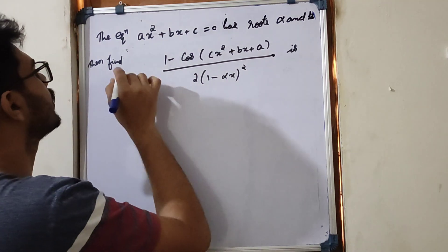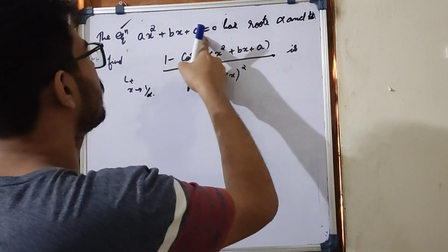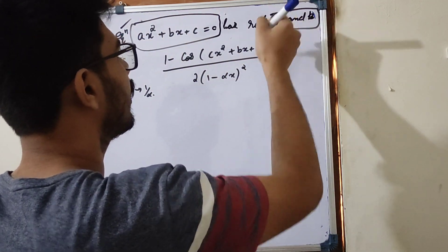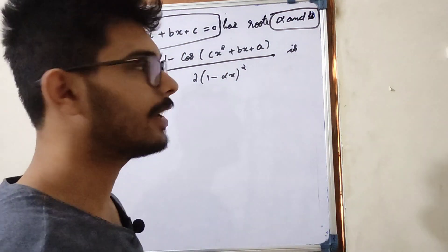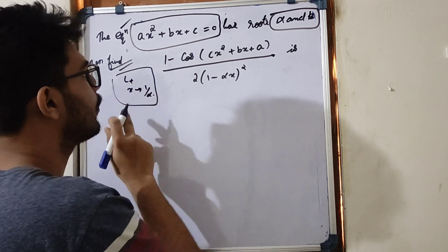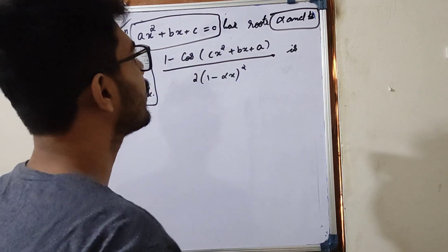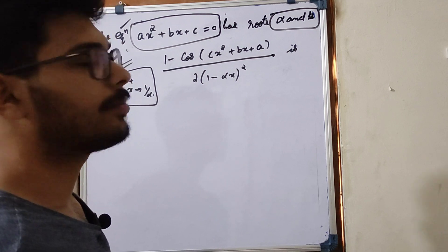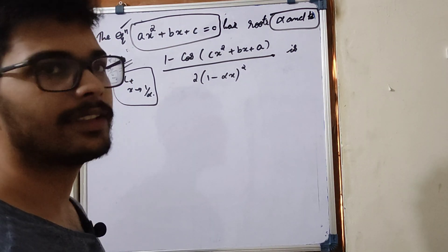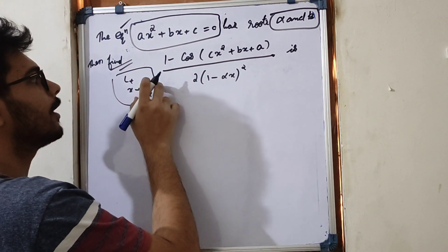Now let's do this. The equation ax² plus bx plus c is equal to 0 has the roots alpha and beta. Then find limit x tends to 1/alpha of 1 minus cos(cx² plus bx plus a) divided by 2 into 1 minus alpha x.